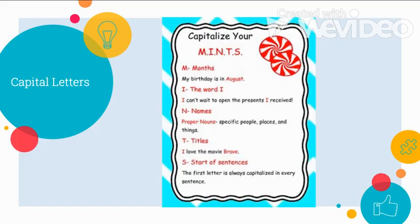It is also important to use correct capitalization. Using the SANGER chart, we need to capitalize months, the letter I, names and proper nouns, titles, and the start of new sentences. Capitalizing words allows them to be set apart from the other words in a sentence. A capital letter is like a highlight — it draws the reader's attention. Now we are going to go back into my feature article and edit it to have correct capitalization and punctuation.